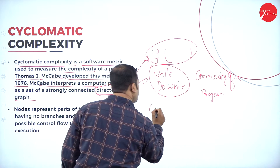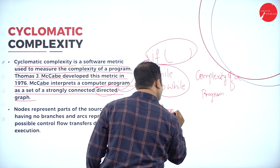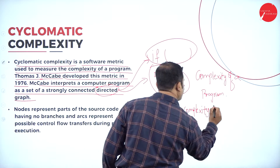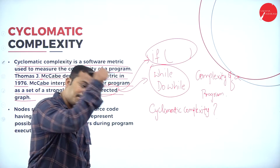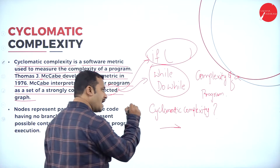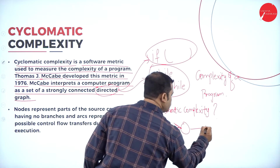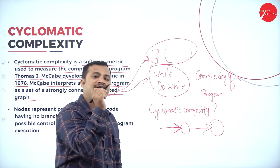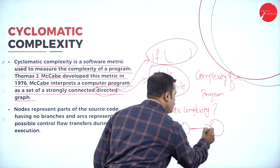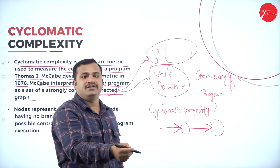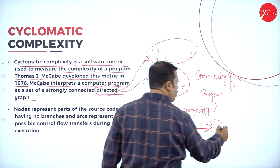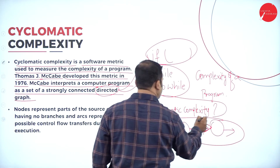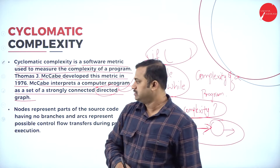Why is it called cyclomatic? We have a cycle which is represented by a directed graph, with arrows from one node to the next node and so on. A directed graph represents a cycle of nodes which are traversed at certain points of time, so it is called a cycle of graph. That is why the name is called cyclomatic complexity.